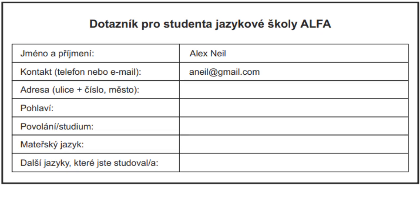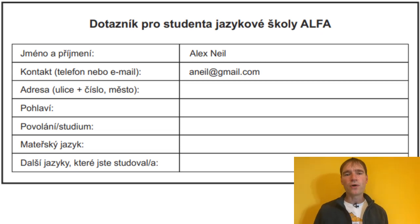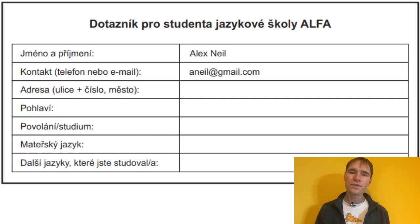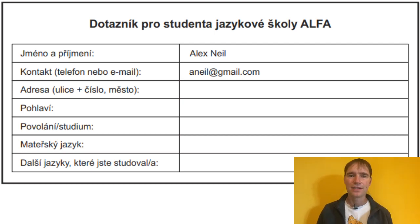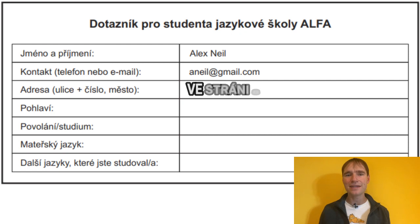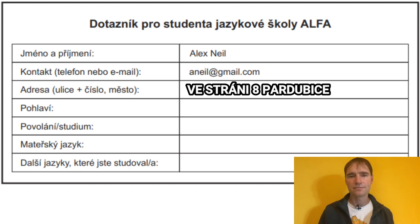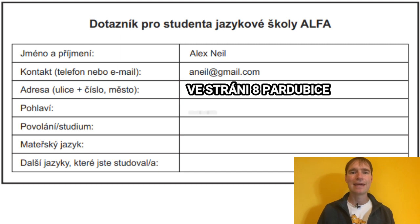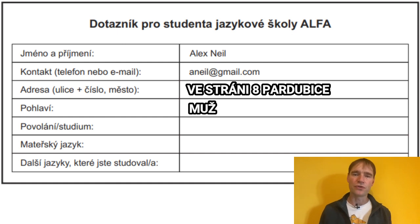Now take a quick look at the form. So we already have the first name, the surname and the email. On the third line there is 'adresa', which is of course address. So we will write a fake Czech address: Ve stráni 8, Pardubice. Now 'pohlaví' — that is gender. So we will write 'muž', which is male. If it were female, it would be of course 'žena'.